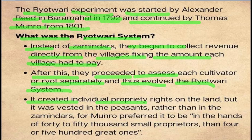This is the individual property rights on the land, but it was vested in the peasants rather than in the Zamindars. Monroe preferred to have it in the hands of 40,000 to 50,000 sovereign property holders than in the force of 500 powerful ones.